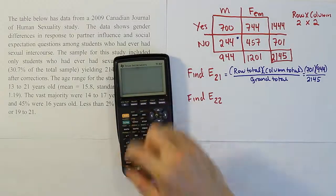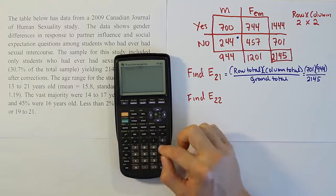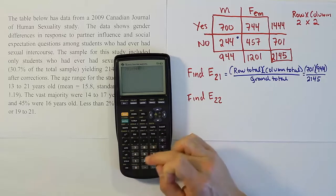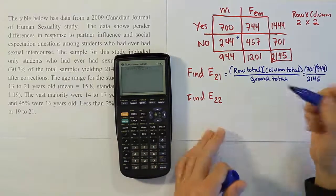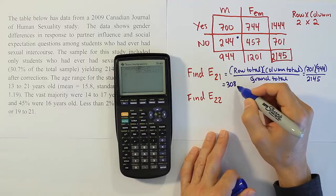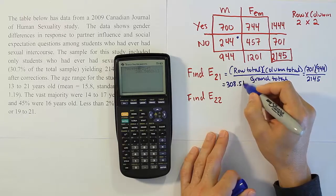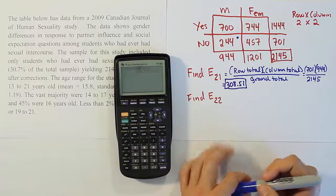Let's see what that turns out to be. It's 701 times 944 divided by 2,145. When we're done, we get the answer 308.51. So 308.51.